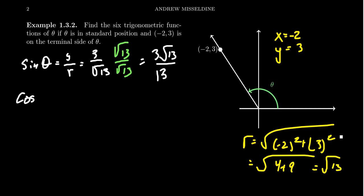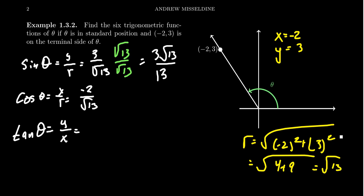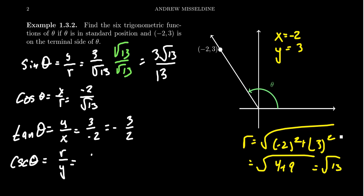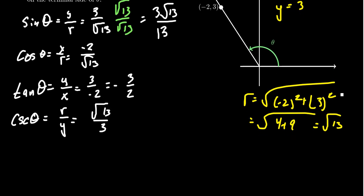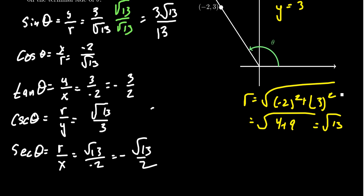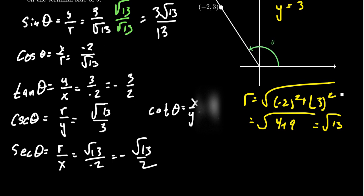Cosine of theta is x over r, so we get -2 over the square root of 13. Tangent of theta is y over x, which gives 3 over -2, or negative three-halves — it doesn't matter where the negative sign goes as long as it's there. Cosecant of theta is r over y, giving the square root of 13 over 3. Secant of theta is r over x, which is the square root of 13 over -2, or equivalently negative square root of 13 over 2. Cotangent of theta is x over y, which in this situation is -2 over 3, or negative two-thirds. Those are our six trigonometric ratios for this angle. Notice we didn't even need to know the angle measure — the trig ratios are computed from a point on the terminal side.